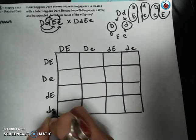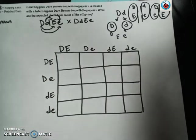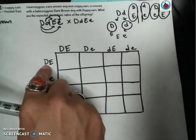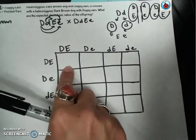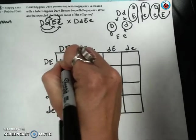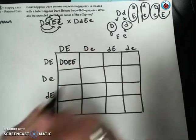So when we set up this dihybrid cross, what we're really saying is what happens if this gamete fertilizes that gamete, what will the offspring look like? What will their genotype and phenotype be?